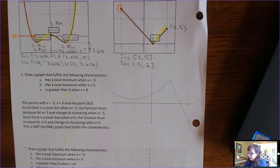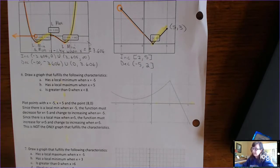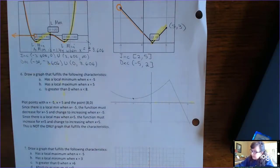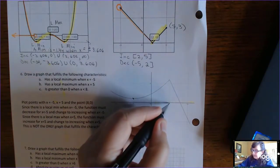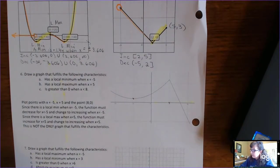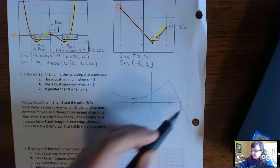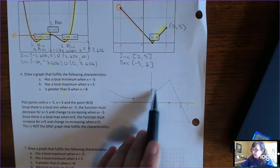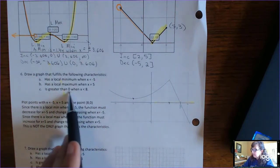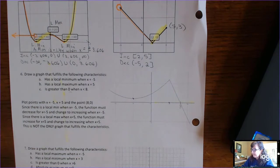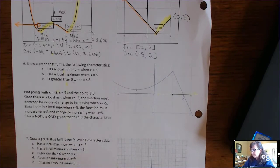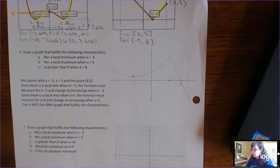Draw a graph that fulfills the following characteristics: it has a local minimum when x equals negative 5, a local maximum when x is 5, and it's greater than 0 when x is less than 8. Here is 6, 7, 8 — the function is above the x-axis when x is less than 8. That's the graph I came up with. It's not the only graph, but that's one of them.